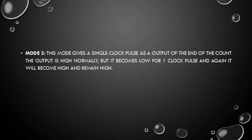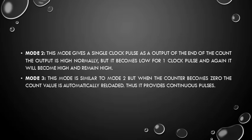Mode 2: this mode gives a single clock pulse as output at the end of the count. The output is normally high but becomes low for one clock pulse, then returns high and remains high. Mode 3: this mode is similar to Mode 2, but when the counter reaches zero, the count value is automatically reloaded, providing continuous pulses. Thus we have described the basic concepts of the 8155 multi-purpose programmable device. Thank you.